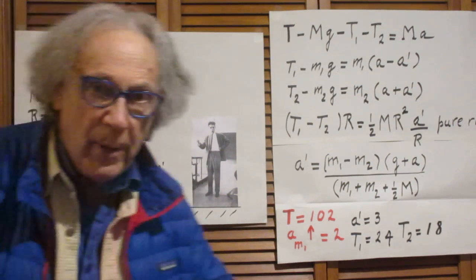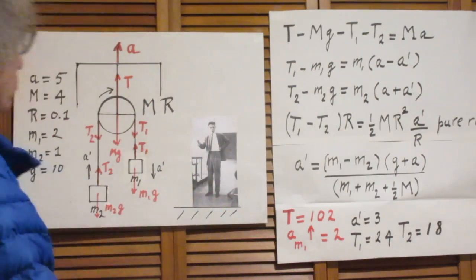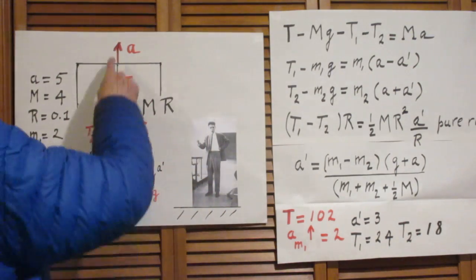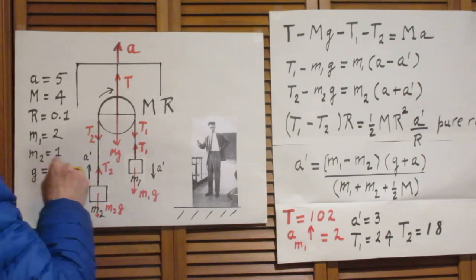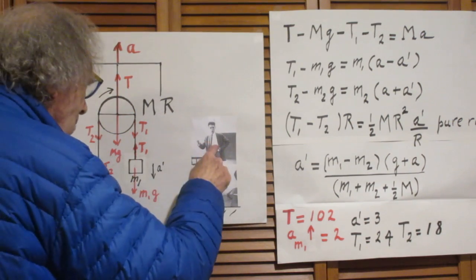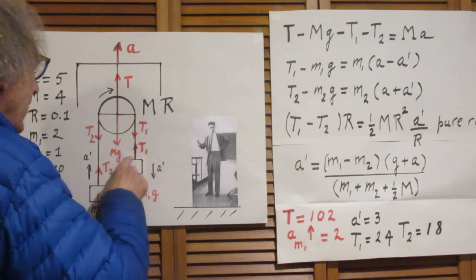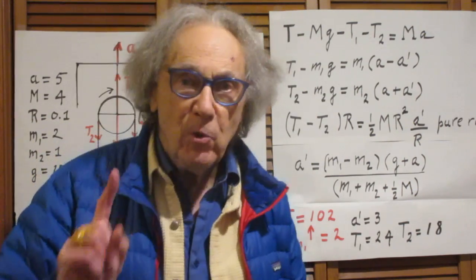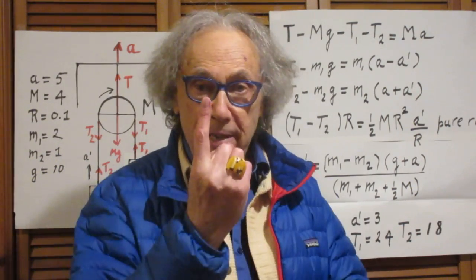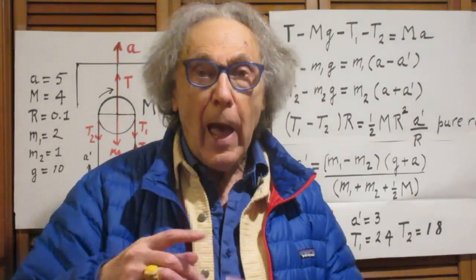The question was: what is the tension in this string? And when I, Walter Lewin, look at this object m1, in what direction will I see the acceleration, either up or down, and what will be its magnitude?